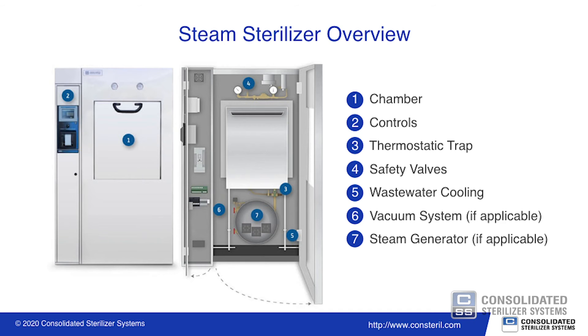Lastly, there is a wastewater cooling mechanism, which cools effluent — that is, air, steam, and condensate — before it enters the drain piping. An autoclave might also include a vacuum system, which enables the user to forcibly remove air from the chamber with a vacuum. And a steam generator or boiler, which uses electric heating elements to heat water and generate steam.